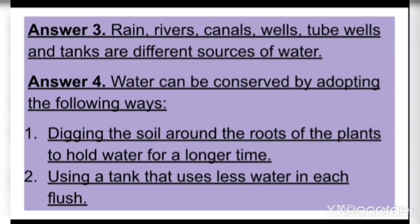Answer three: Rain, rivers, canals, wells, tube wells, and tanks are different sources of water. Answer number four: Water can be conserved by adopting the following ways — digging the soil around the roots of plants to hold water for a longer time, and using a tank that uses less water in each flush.